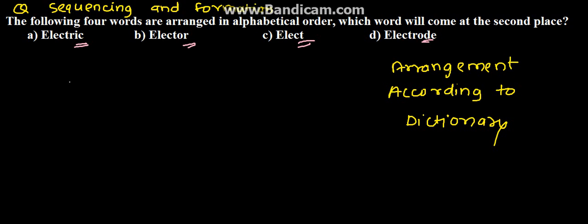So if we arrange, first we have E in all of them. Then we have L in all of them. Then we have E in all of them. Then we have C T, C T, C T, C T. So C and T also in all of them.